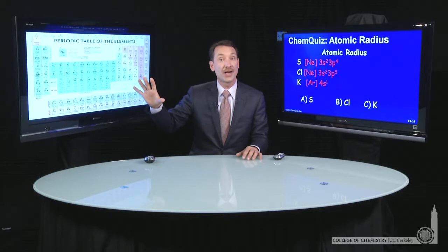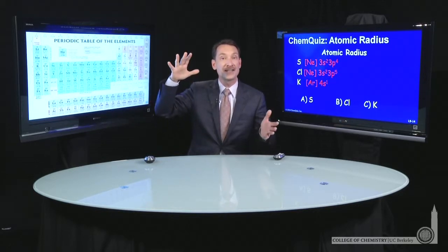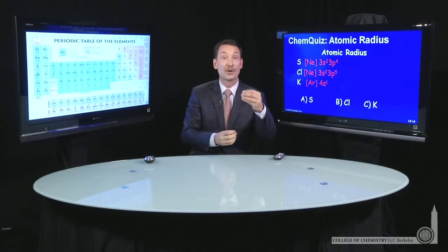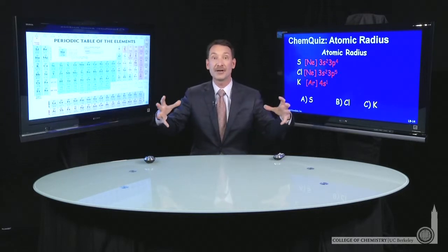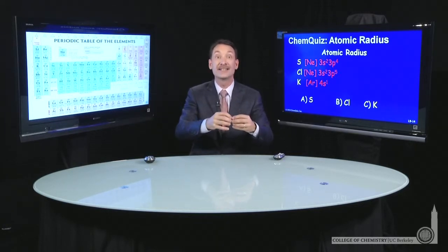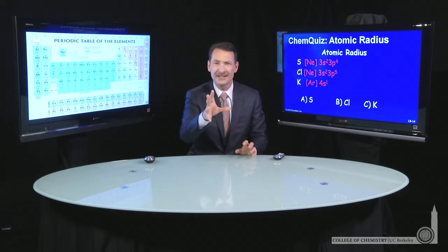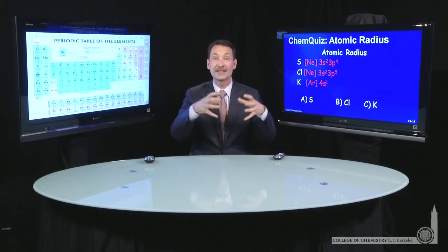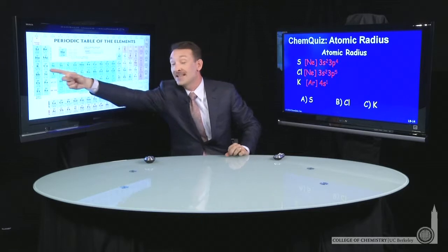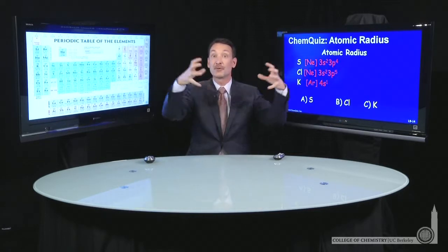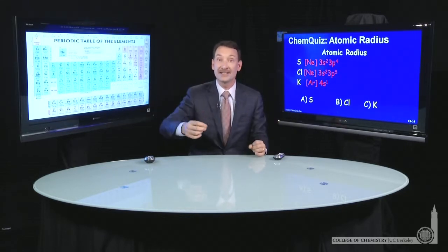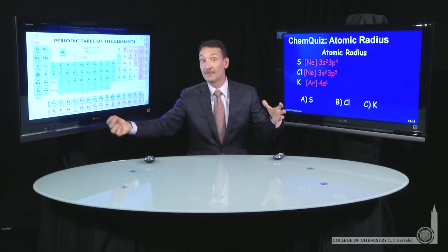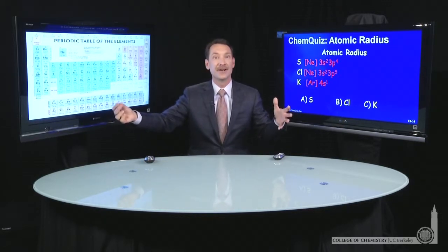Sulfur and chlorine — as I go across the periodic table, ionization energies generally increase. Going from sulfur to chlorine, I have one more positive charge in chlorine, but electrons in the same principal quantum level, so it's a little harder to ionize. Why? The atom is contracting slightly — chlorine is slightly smaller in radius than sulfur. When I go to potassium, I go from principal quantum level three to principal quantum level four, and it becomes quite easy to ionize. That's a big jump in atomic radius, as the electron is pulled off potassium — a rather easy energetic step.